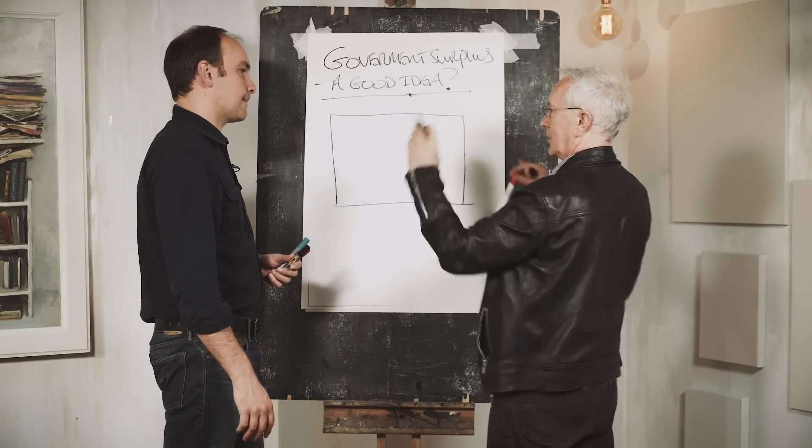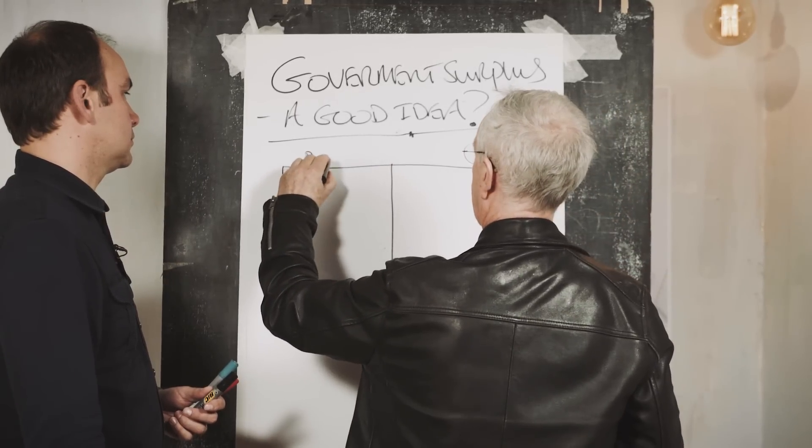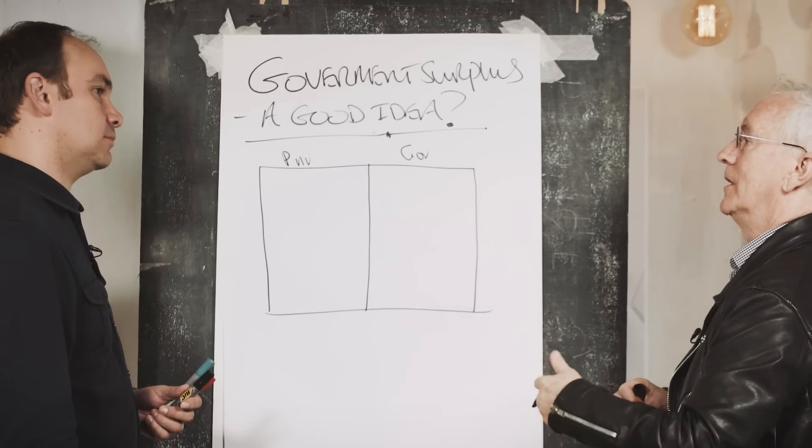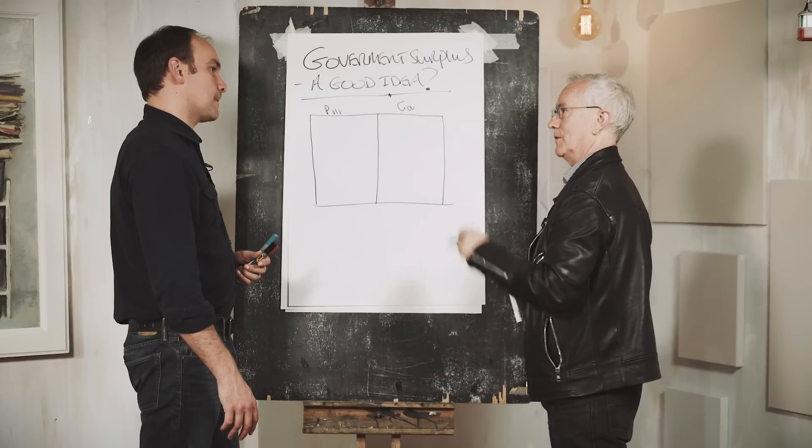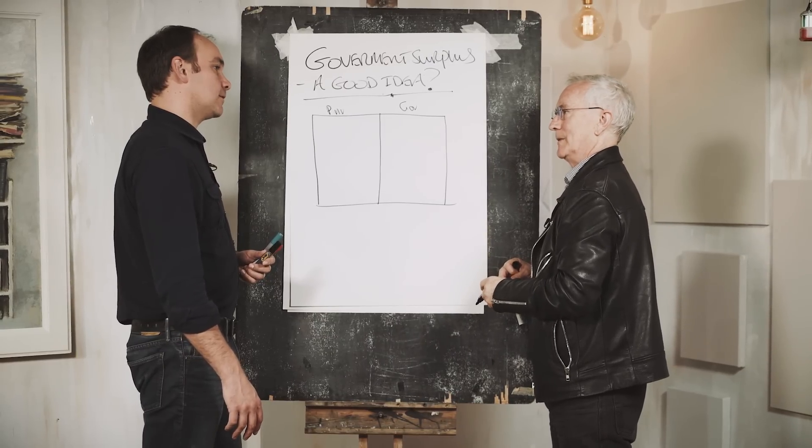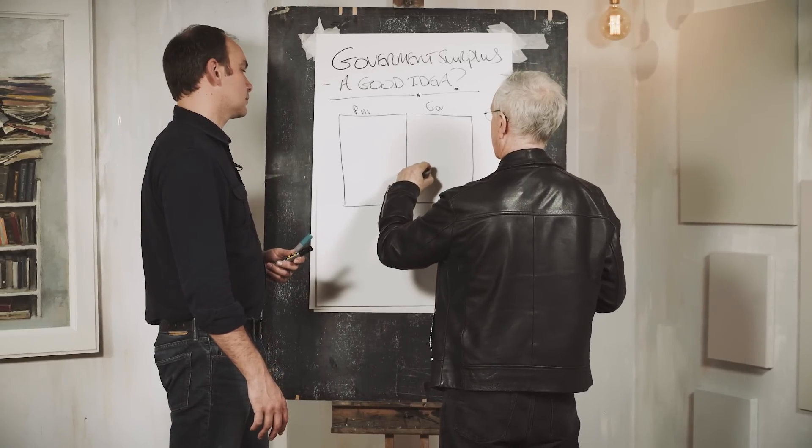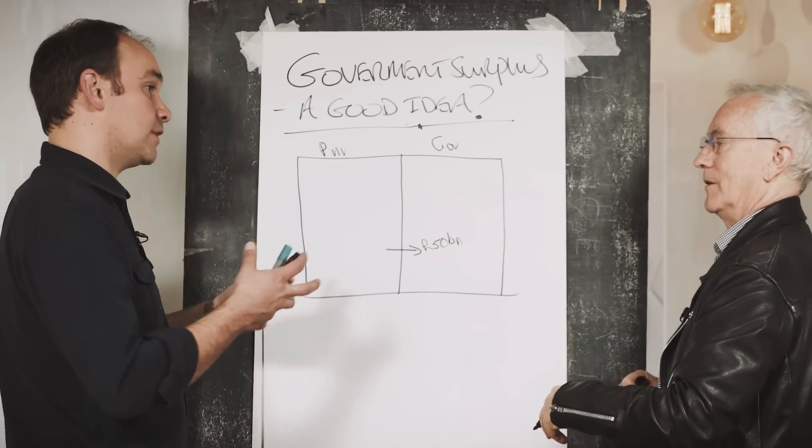Let's actually think at the scale of an entire economy and divide it into the private sector and the government sector and see what's actually involved if the government's going to run a surplus. For it to run a surplus it has to tax you more than it spends on you. What happens as a result is, let's say it's a £50 billion surplus, that means they're taking £50 billion out of circulation. So that's money out of the economy?